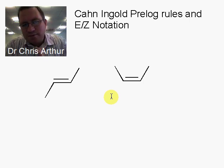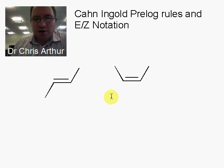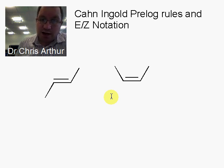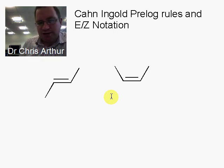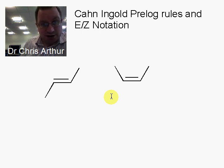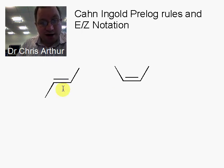This is basically an extension of the Cahn-Ingold-Prelog rules covered in the previous video. This time we're going to specifically look at how we use Cahn-Ingold-Prelog rules to assign E and Z notation, which is what we use for naming double bond isomers.